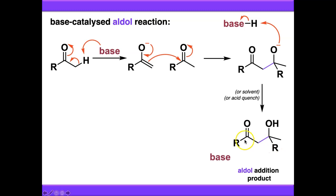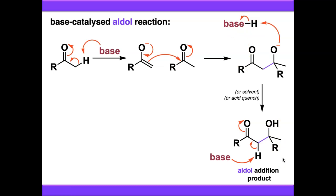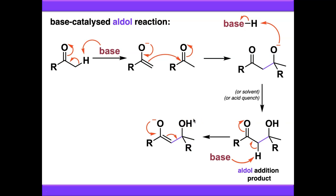However, under certain reaction conditions, if you've got additional protons at this position here — this is still the alpha position to this carbonyl compound — so you can enolise more than once. If you've still got residual base in your system, which you've just reformed, then you can remove another proton and enolise your aldol addition product. We then end up with this kind of enolate, and this is basically set up to eliminate the hydroxide group. But note that hydroxide is a poor leaving group and typically you should not be kicking hydroxide out of molecules without protonating it first.